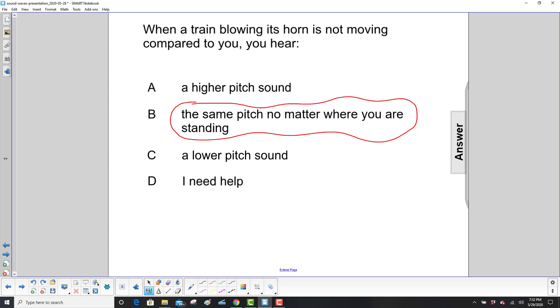You could be inside the train, you could be standing somewhere on the side, you can be half a mile away, but as long as there's no relative motion between you, there's no Doppler effect, and the frequency that the horn puts out is the frequency you hear.